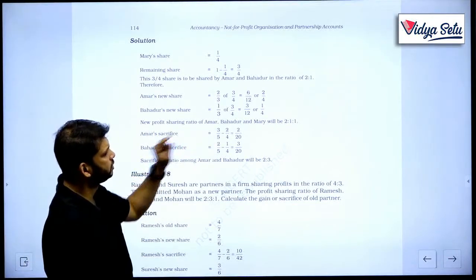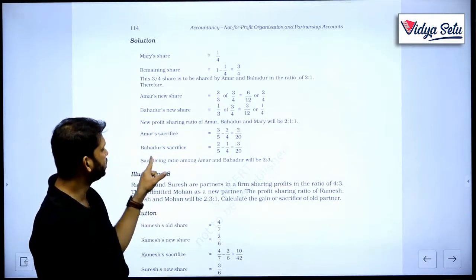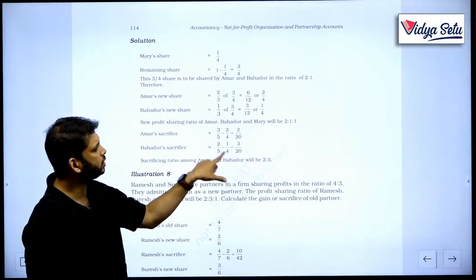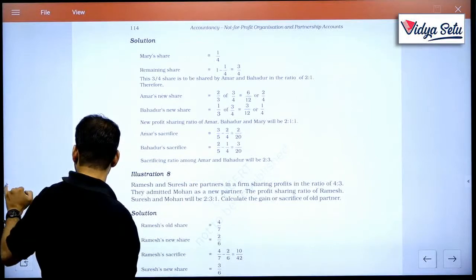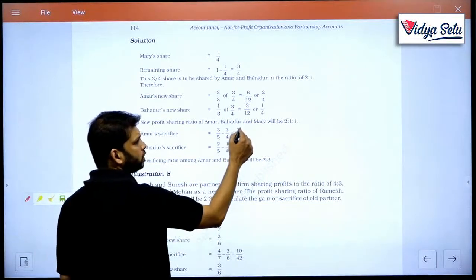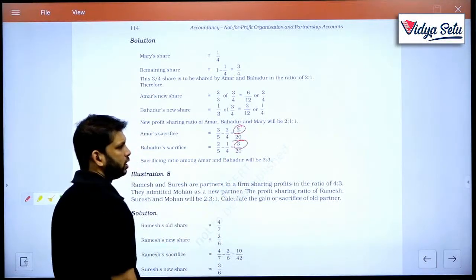Amar's sacrifice, old ratio minus new ratio. This much is Amar's sacrifice. Bahadur's sacrifice, old ratio minus new ratio. This is Bahadur's sacrifice. And if we want to see what is the sacrificing ratio, it's 2 is to 3.